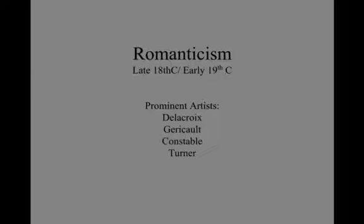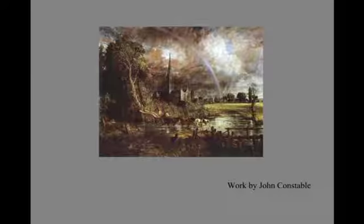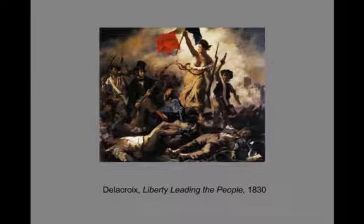Romanticism is another movement that actually coincided and overlapped a bit with neoclassicism. Some prominent artists here would be Delacroix, Géricault in France and Constable and Turner in England. Looking at a work by Constable, you can see a great distinction from the neoclassical. Instead of being based purely on fact, it's really about this swelling of emotion and swelling of the weather — very turbulent, with bright sunshine on parts of the clouds and a sense of an impending storm. You're caught up in the romance of the wind and weather and the tumultuous nature of life.